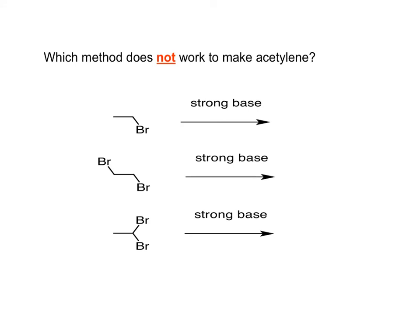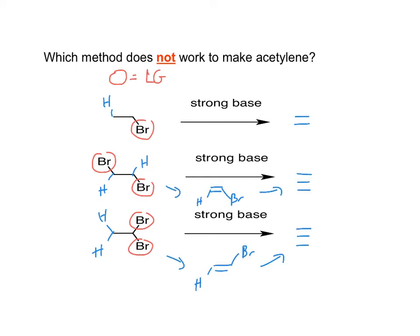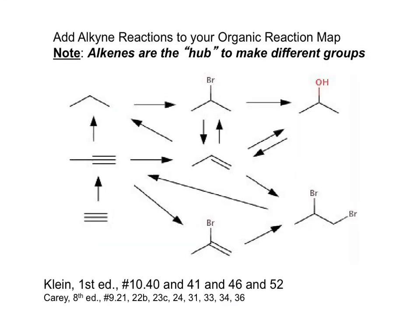Let's review these elimination reactions and identify the method which does not work to make acetylene. First, circle the leaving groups and draw in the H bond to each beta carbon. Here is the product of each reaction — the first reaction does not make acetylene. This reaction map shows all the reactions we've covered so far, except for one radical reaction which we'll cover later. Stop the video and review the reaction conditions for each reaction.